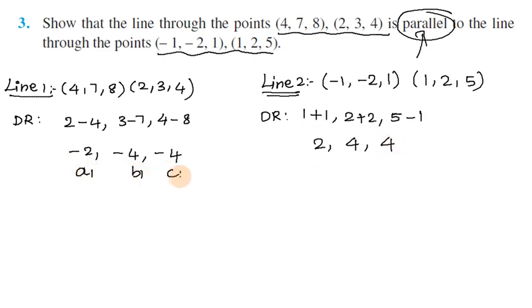Now checking the proportionality condition for parallel lines: a1/a2 = b1/b2 = c1/c2. Here a1/a2 = -2/2 = -1, b1/b2 = -4/4 = -1, c1/c2 = -4/4 = -1. Since all ratios are equal, Line 1 and Line 2 are parallel.